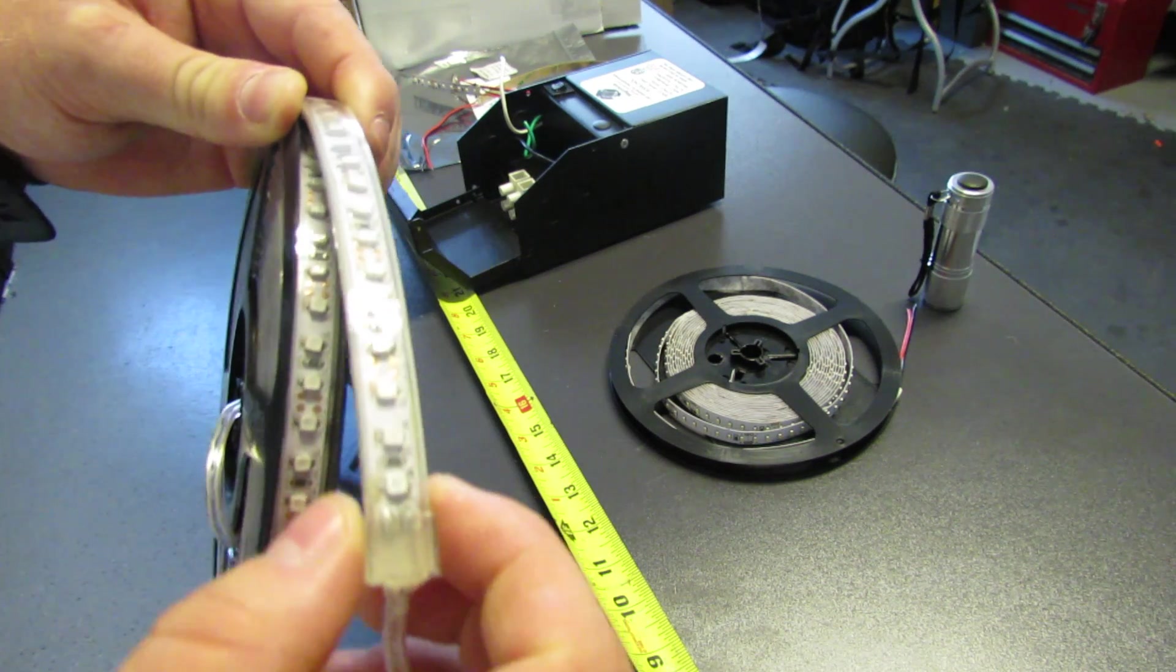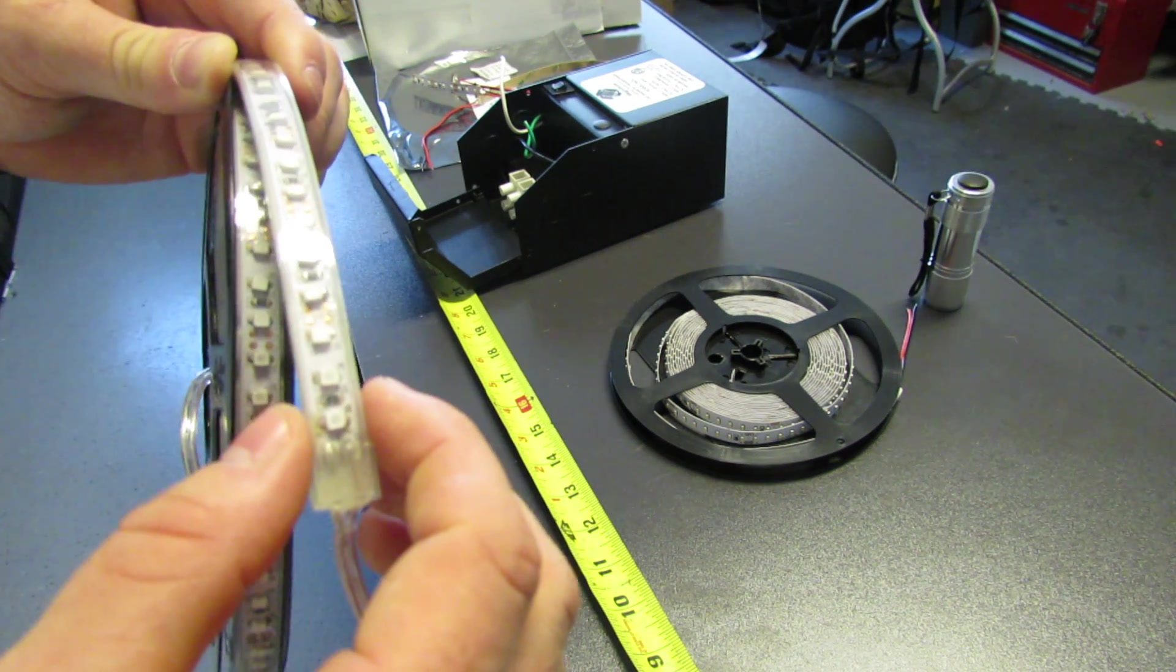It can be out in the rain, it can get hosed on. It's going to protect the strip from dust and those types of things.